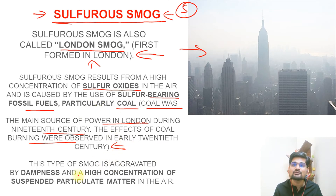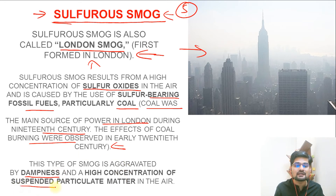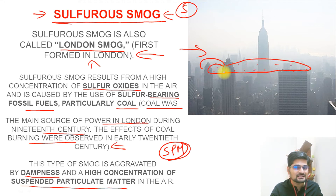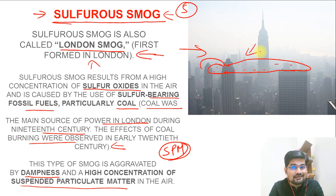This type of smog is aggravated when there is dampness — moisture content and fog formation. High concentration of suspended particulate matter (SPM) is present, on which condensation happens due to cooler conditions, mixing with pollutants to form sulfurous smog in the air, which is very hazardous and harmful.